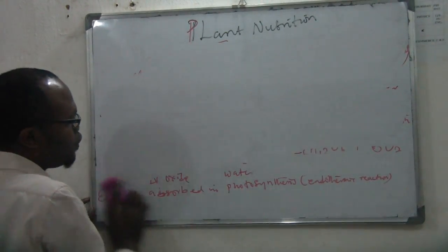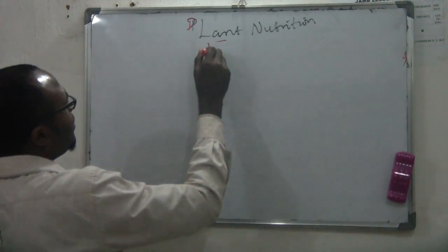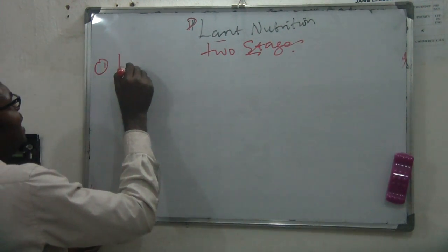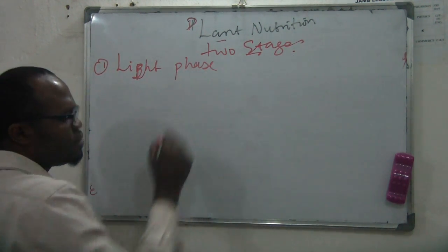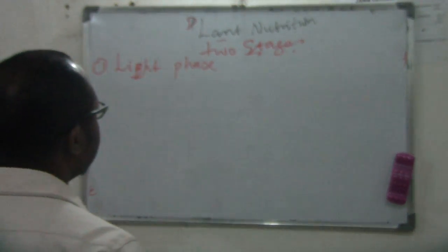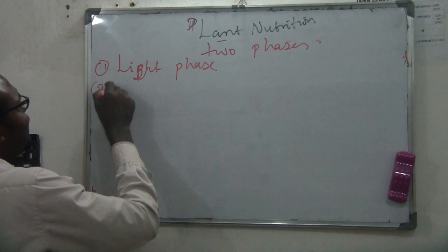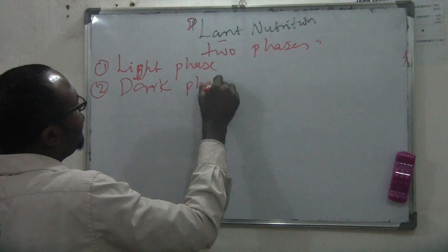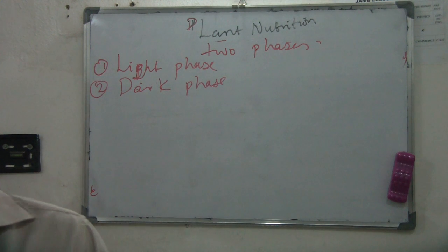Photosynthesis happens in two stages, or phases. Number one is what we call the light phase, and number two is the dark phase.